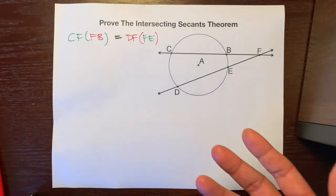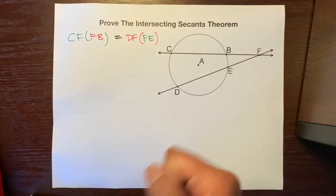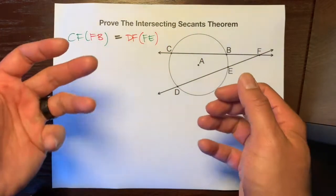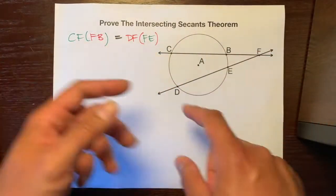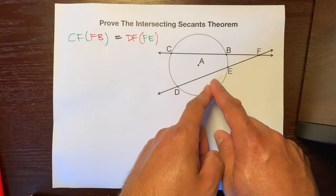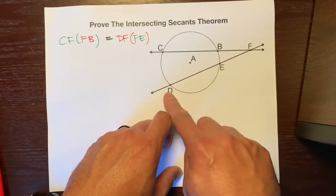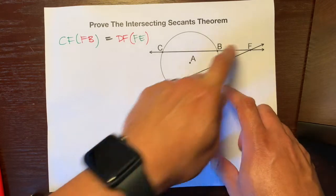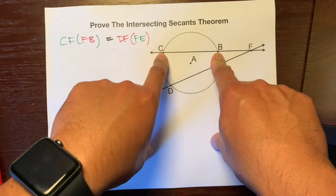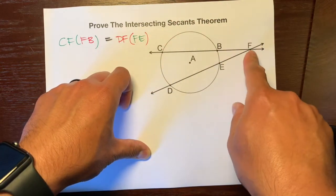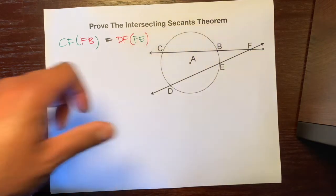Now that you understand it, let me help explain it. The intersecting secants theorem is talking about side lengths involving two secants. A secant line is a line that intersects a circle twice. Here's one secant that intersects the circle at D and E, and another secant line that intersects the circle at C and B, and these two secants intersect each other — hence the intersecting secants theorem.